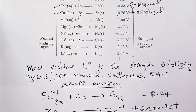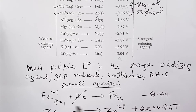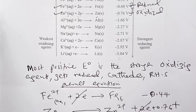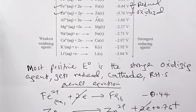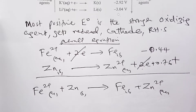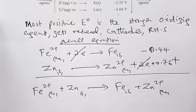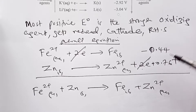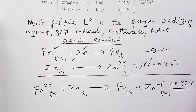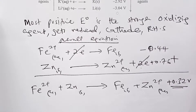Then we add the two to get the overall equation. Obviously the two electrons will cancel. This side we have Fe2+ ions aqueous reacting with zinc solid to give Fe solid and zinc ions aqueous. This becomes your overall equation. The E cell — the electromotive force — is also gotten by adding the two: negative 0.44 plus 0.76 gives positive 0.32 volts. This would be the value you read on the voltmeter.